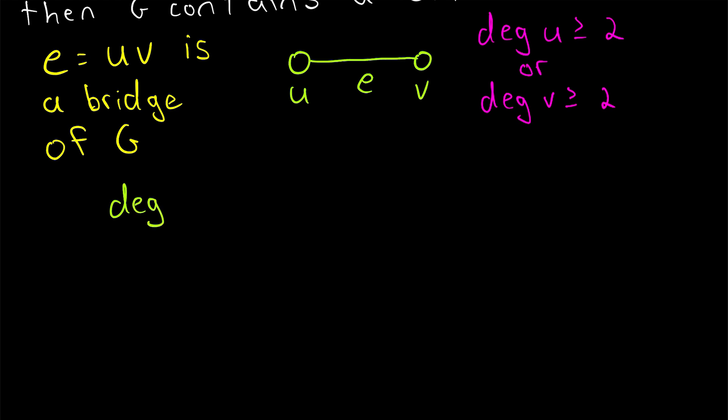Firstly, note that the degree of U cannot be equal to 0, and the degree of V cannot be equal to 0. This is because they're adjacent to each other, so we know that both of their degrees have to be at least one. So we know that neither of the end vertices of our bridge has a degree equal to 0. Thus, the degree of U is greater than or equal to 1, and the degree of V is greater than or equal to 1.